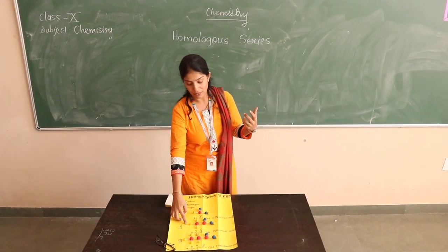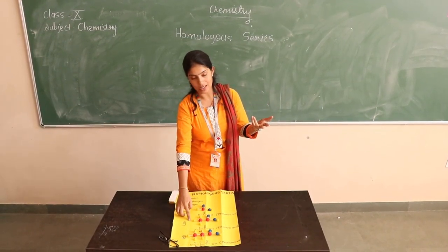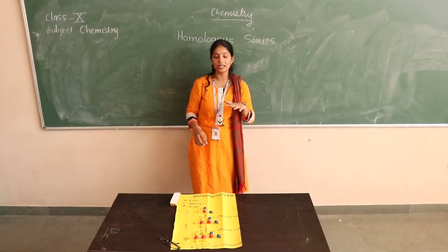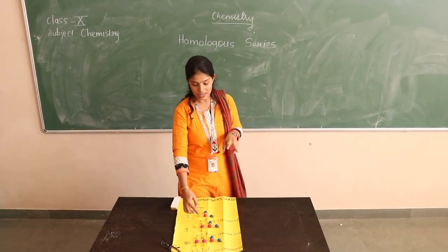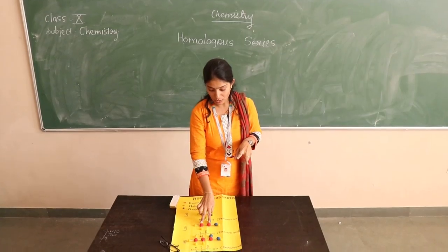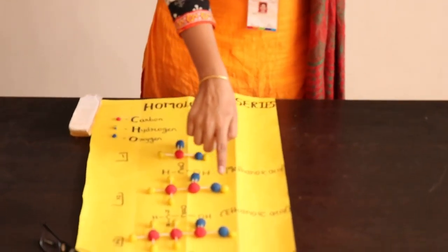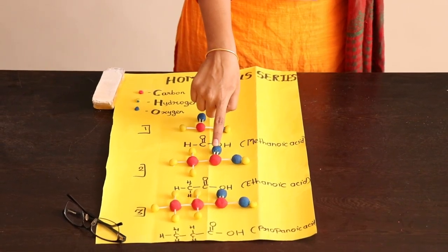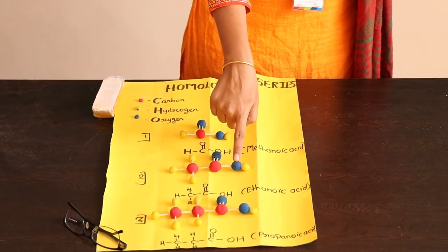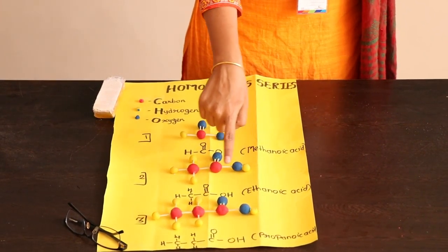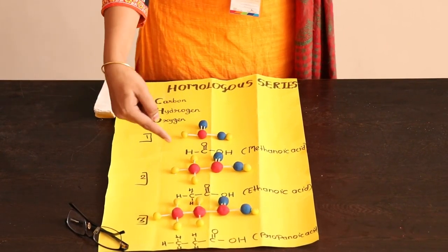The second example in the homologous series is ethanoic acid. Ethane is a hydrocarbon which consists of two carbon atoms. Here I have taken two carbon atoms. Out of these two carbon atoms, one carbon atom consists of its functional group — that is C double bond O, and OH. And an alkane group is attached to the other carbon atom.